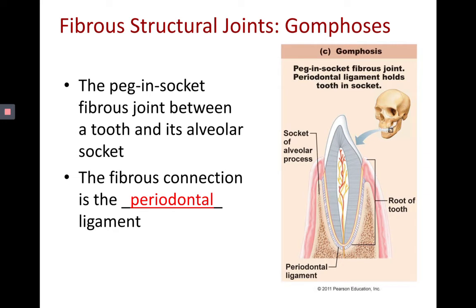Here is the gomphosis — the peg-and-socket joint — which is essentially the tooth in its socket. You can see the periodontal ligament pointed out, which is the fibrous tissue that holds a tooth in its socket.